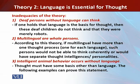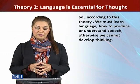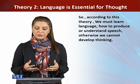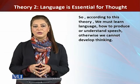So we have conflicting views regarding this theory. The inadequacies are related to the deaf person's ability to think, the ability of multilinguals as being whole persons, and also the intelligent animal behavior which can occur without language. In summary, according to this theory, we must learn language — how to produce and understand it — otherwise we cannot develop thinking.